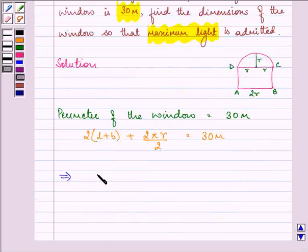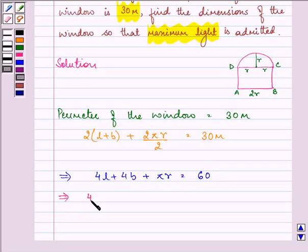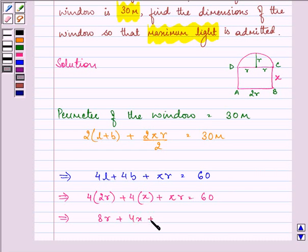First of all, we have 4 length plus 4 breadth plus pi r equal to 60. That implies, now in place of length, we can write 2r plus 4 breadth. Let breadth be x plus pi r equal to 60. This further implies 8r plus 4x plus 2xr is equal to 60.